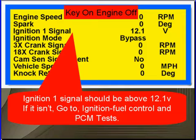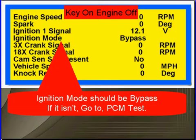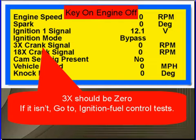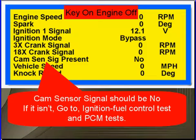The ignition one signal should be above 12.1 volts. If it isn't, go to ignition fuel control and PCM test. Remember that the battery has to be above 12.1 volts for this signal to be above 12.1 volts, so if you have a charging or battery problem you should have already fixed that. Ignition mode should be bypass — if not, test the PCM. The 3x signal should be zero; if it isn't, go to ignition fuel control test. The 18x signal should be zero; if not, go to ignition fuel control test and PCM test. Cam sensor signal should be no; if it isn't, go to ignition fuel control test and PCM test.